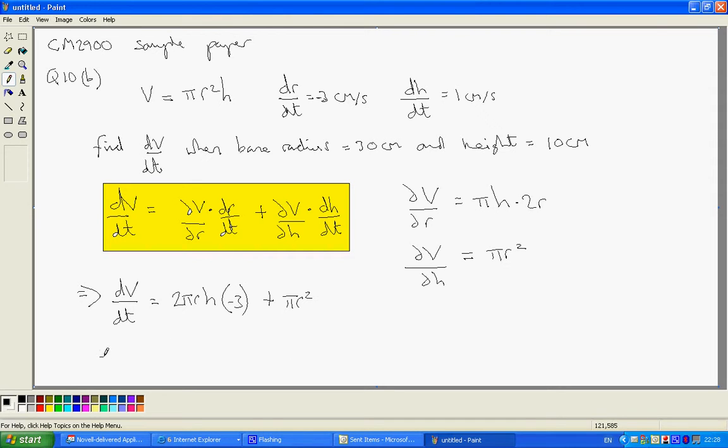And therefore, dV by dt when R equals 30 and H equals 10 is going to be given by 2 pi R, which is 30, times H, which is 10.